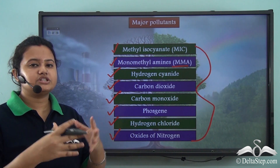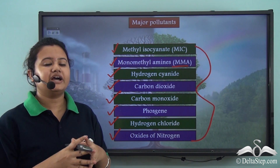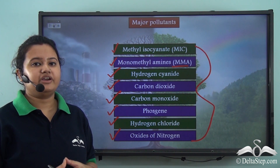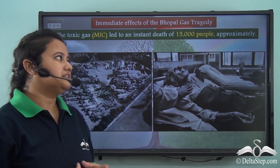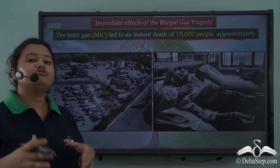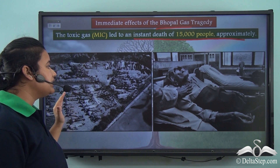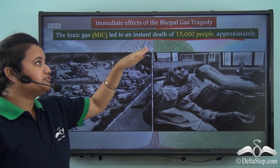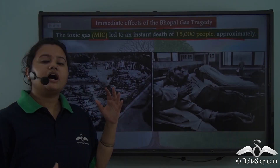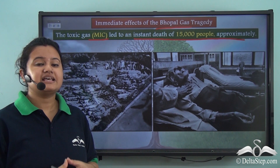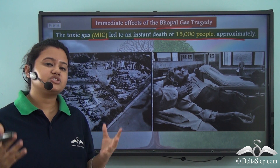These pollutants were heavier than the surrounding air, so they remained close to the ground. As a result, these pollutants could easily attack the citizens of that region. The immediate effect of the Bhopal gas tragedy was the instant death of approximately 15,000 people. About 15,000 people were killed immediately due to inhalation of MIC toxic gas. Apart from instant death, exposure to this MIC gas led to other effects such as irritation in eyes, respiratory problems, and suffocation, as seen in the video.